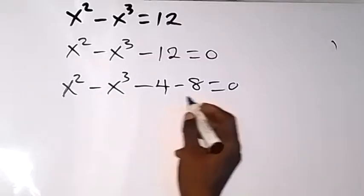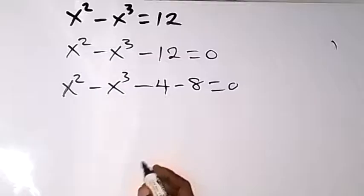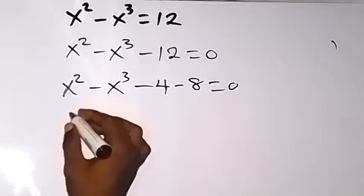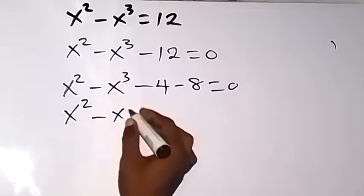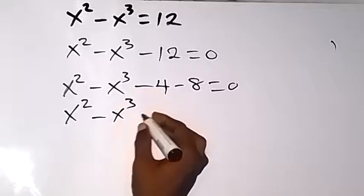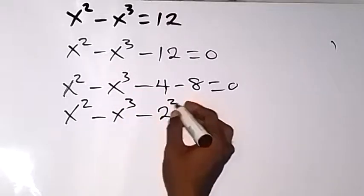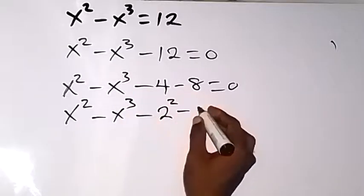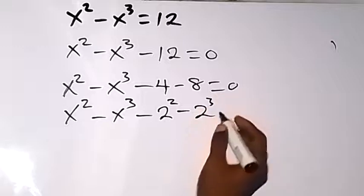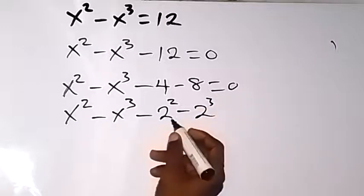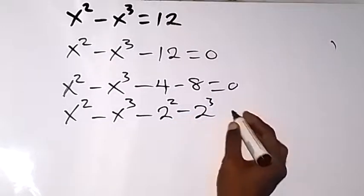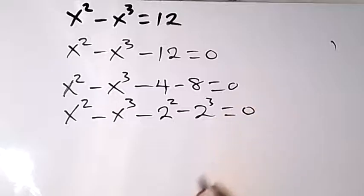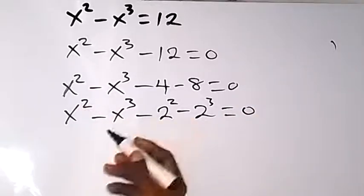And when we write this to base 2, we now have x squared minus x cubed minus 2 squared minus 2 cubed, because 4 can be written as 2 squared and 8 can be written as 2 cubed, equals to 0.